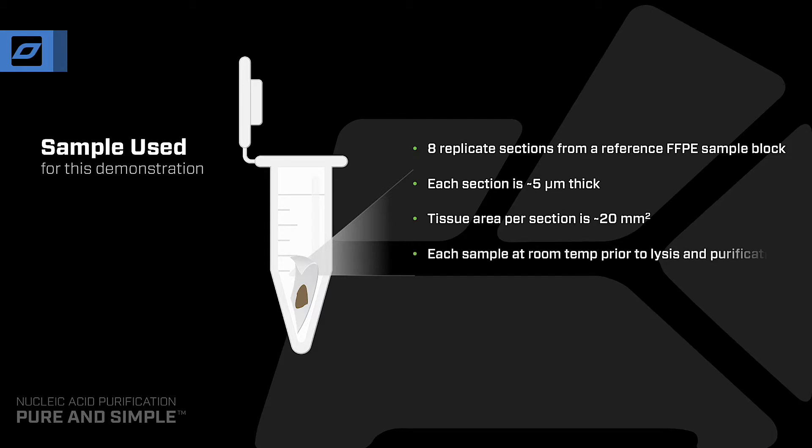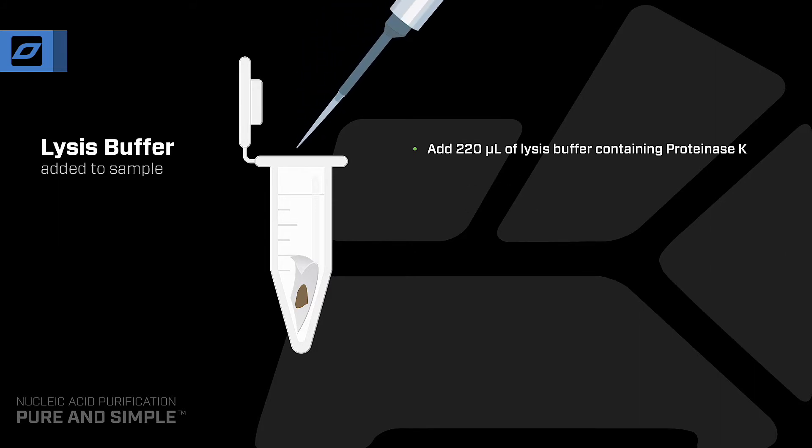The samples are at room temperature before lysis and purification. To lyse the samples, 220 microliters of lysis buffer containing Proteinase K from the reagent kit is added to each sample in a 1.5 milliliter microtube.